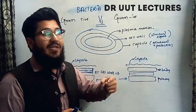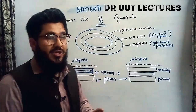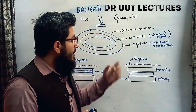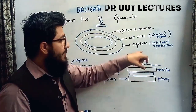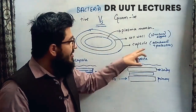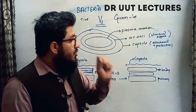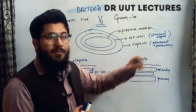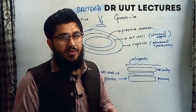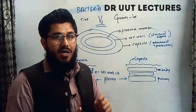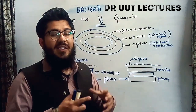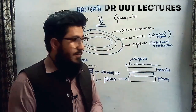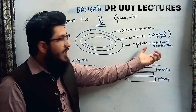The second layer is the cell wall, which provides structural support to the bacteria. The third layer, very important, is the capsule, which encapsulates the bacteria and provides two very important functions: number one, attachment; number two, protection. So, the capsule protects the bacteria against the foreign environment. In summary: capsule provides protection and attachment ability, cell wall provides structural support, and plasma membrane holds the cellular content.